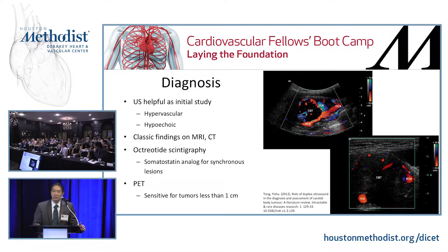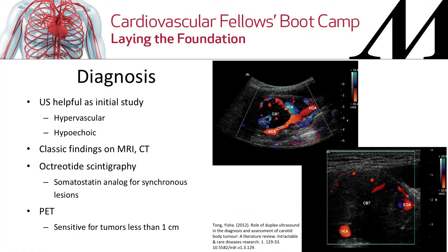With diagnosis, you can diagnose carotid body tumors by angiogram, ultrasound, CT, MRI, and even nuclear medicine tests. Ultrasound is the first-line test for most places, showing a hypoechoic, hypervascular mass. CT and MRI are good for operative planning to understand the extent of the tumor. In cases of familial or syndromatic occurrences, nuclear medicine studies like octreotide scans and PET scans are particularly useful — not for normal screening, but to identify synchronous lesions elsewhere in the body.